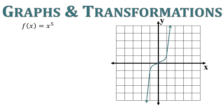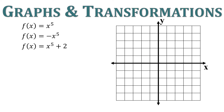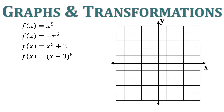We can apply transformations just like we have in the past. If we make it negative x to the fifth, it is going to reflect across the x-axis. What if we add 2 to the function? It's going to move up 2. What if we subtract 3 from the inside? It's going to move right 3.